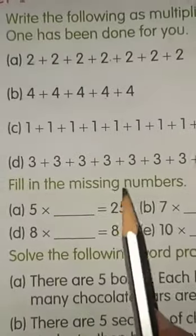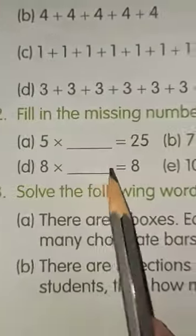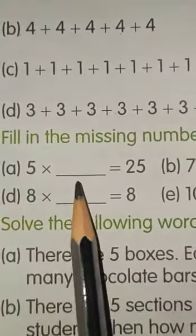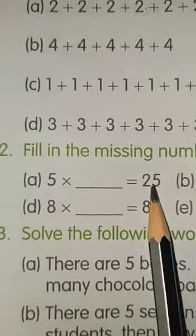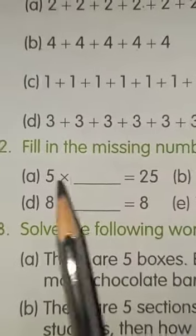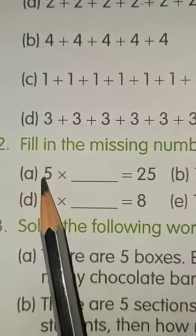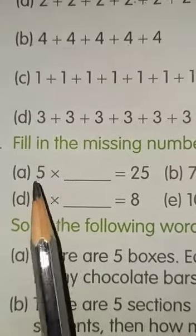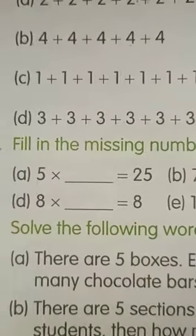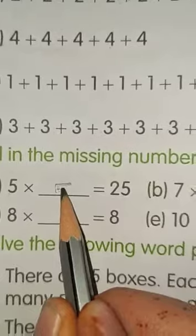Next, fill in the missing numbers. We have to fill the missing numbers. Here, what should be multiplied with 5 so that we can get 25? Let's read the table of 5. 5 ones are 5, 5 twos are 10, 5 threes are 15, 5 fours are 20, 5 fives are 25. So, in the 5th place, we are getting 25.